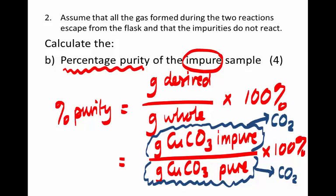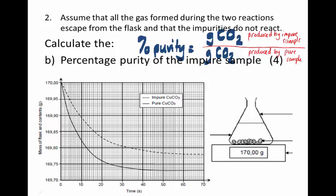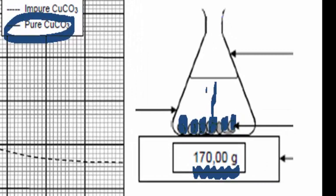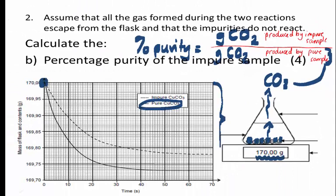In this case, it's easier to determine the amount of carbon dioxide produced in each case than to determine the amount of copper carbonate actually reacting. So we can express percent purity as the mass of carbon dioxide produced by the impure sample divided by the mass of carbon dioxide produced by the pure sample. We do this reaction twice; in both cases, we put 170 grams of substance in. For the pure copper carbonate, all of it reacts and produces carbon dioxide that escapes.